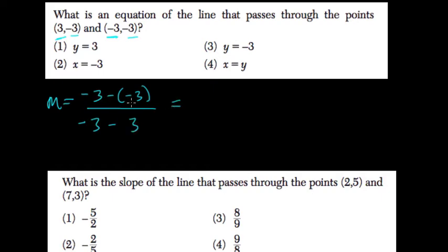So what's negative 3 minus negative 3? Well, we subtract a negative, so we add. Negative 3 plus 3 is 0, right? 0 over anything except for 0 is going to be 0.